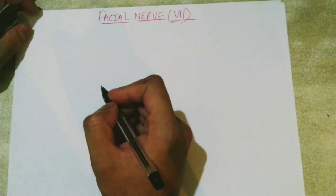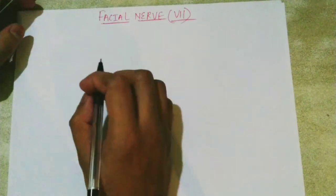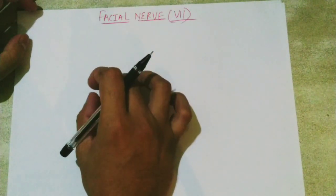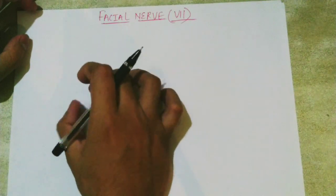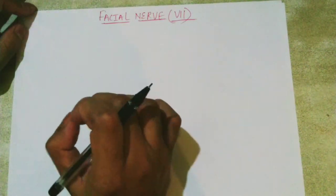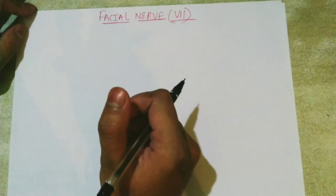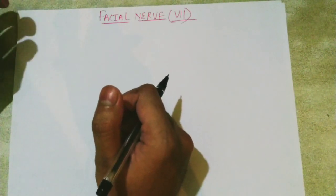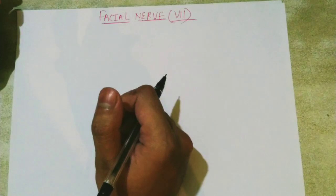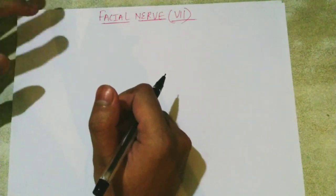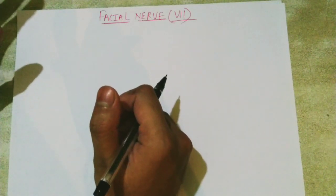We are going to discuss some points about our facial nerve, including its pathway and clinical lesions which can occur if any injury occurs. We will begin with the pathway or course, which can be intracranial and extracranial. Intracranial means the pathway inside our skull, in the cranium. When the nerve goes outside the cranium and reaches our face, that pathway is the extracranial pathway.